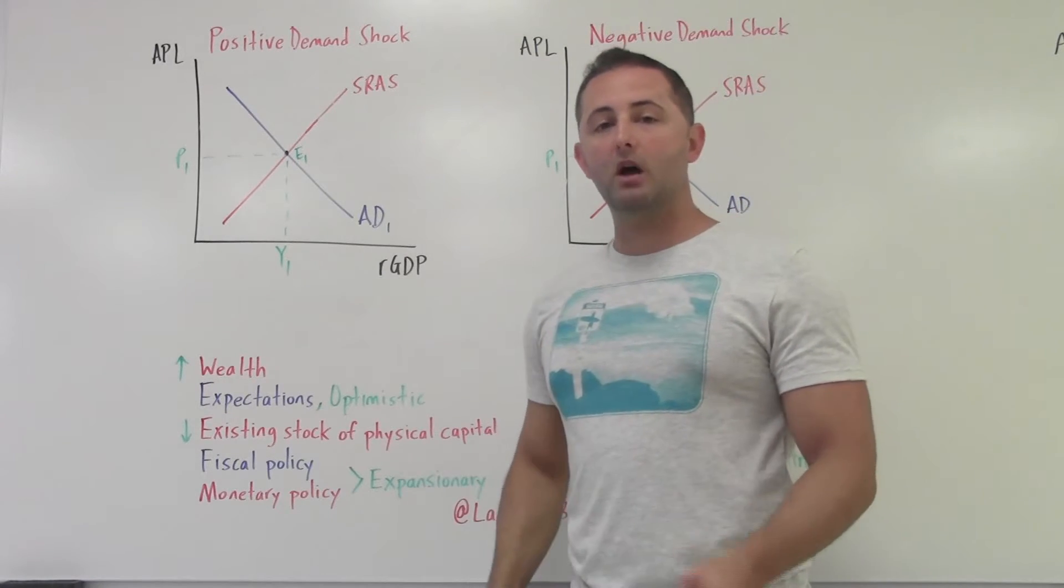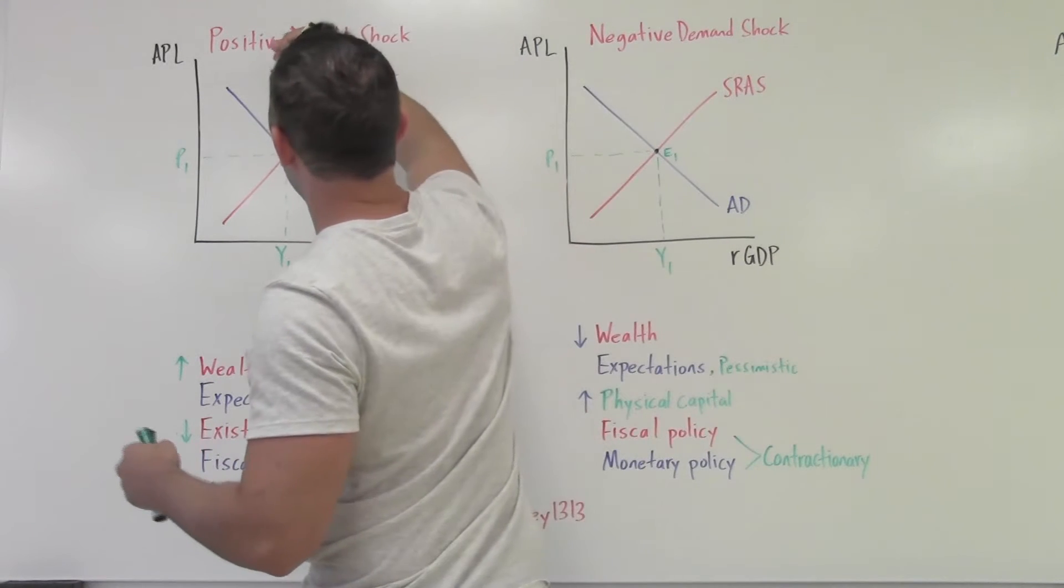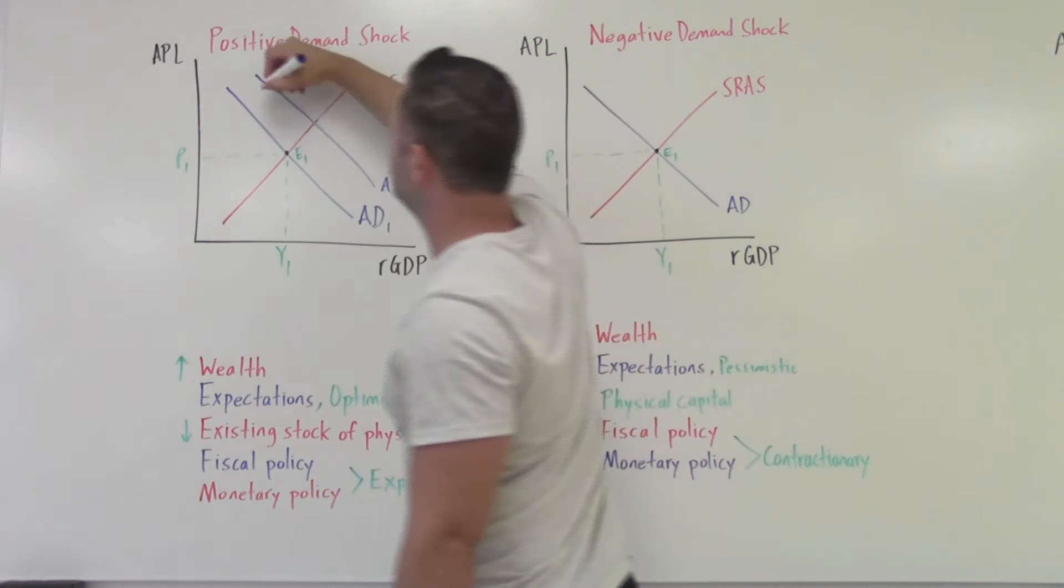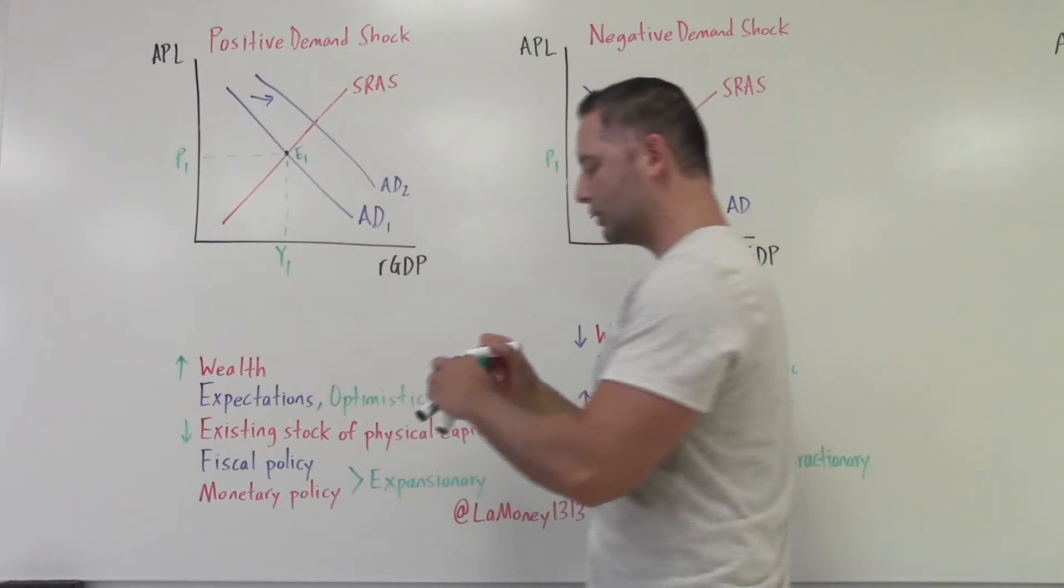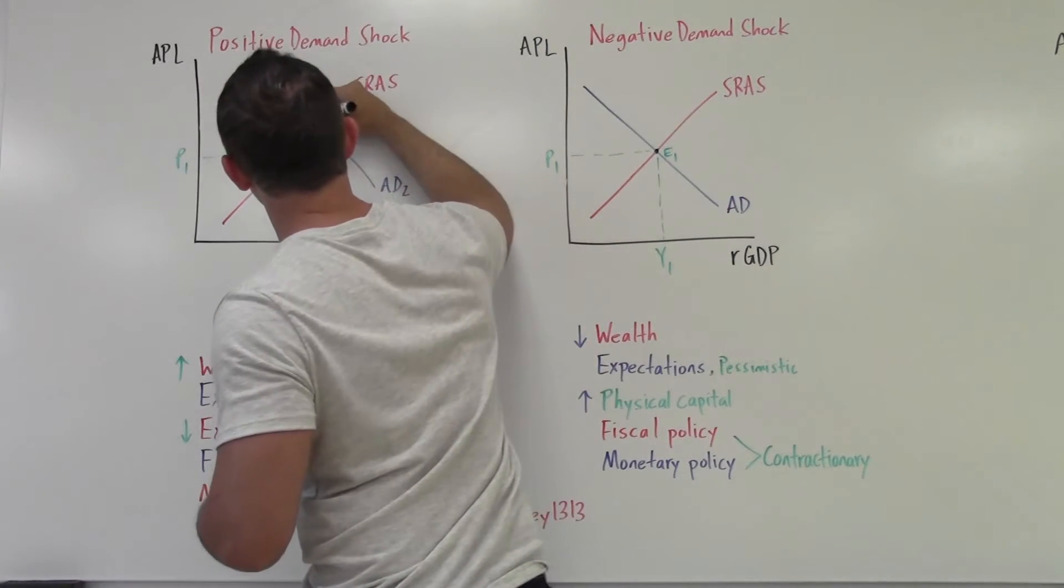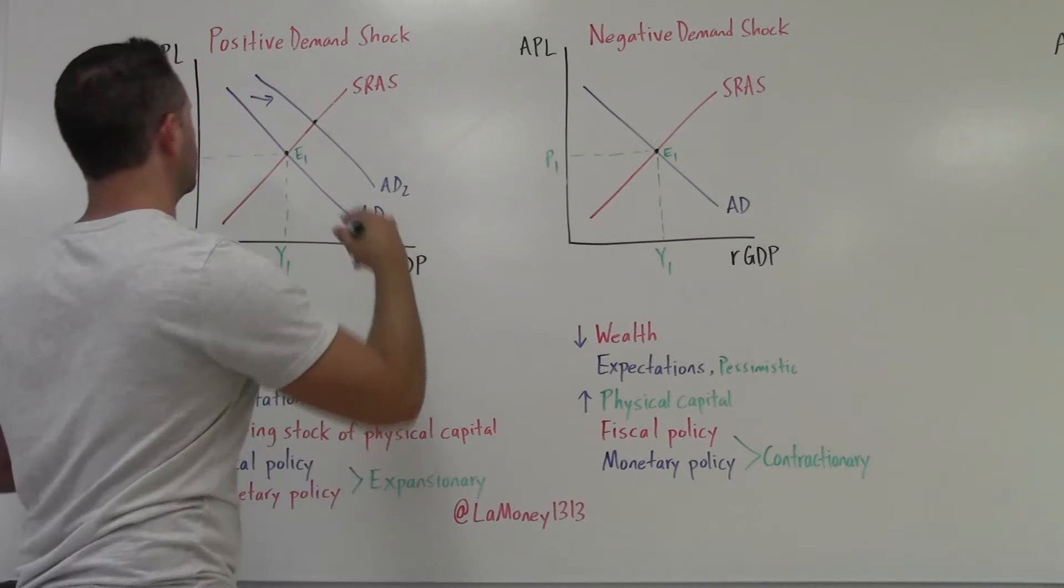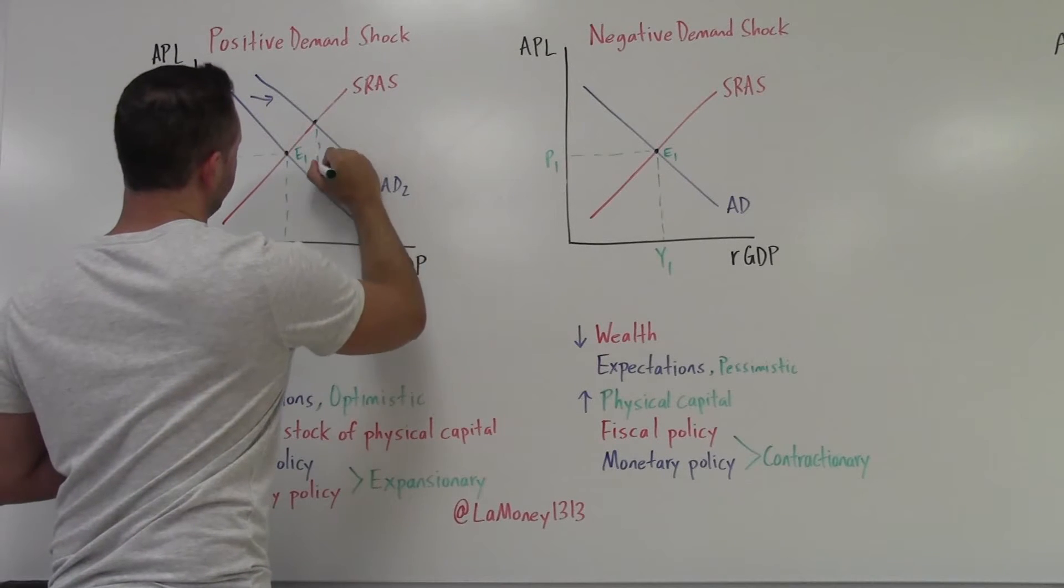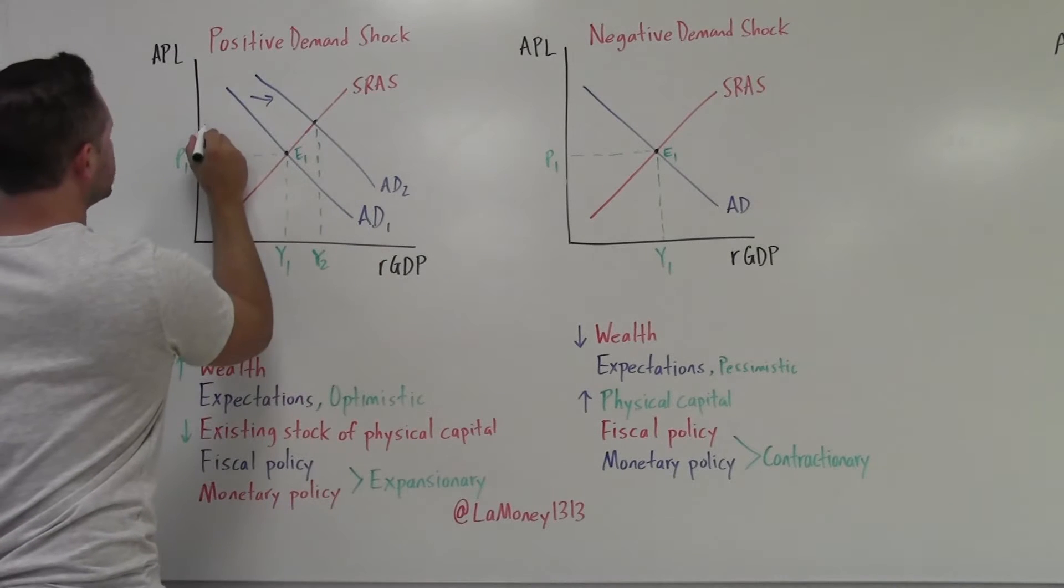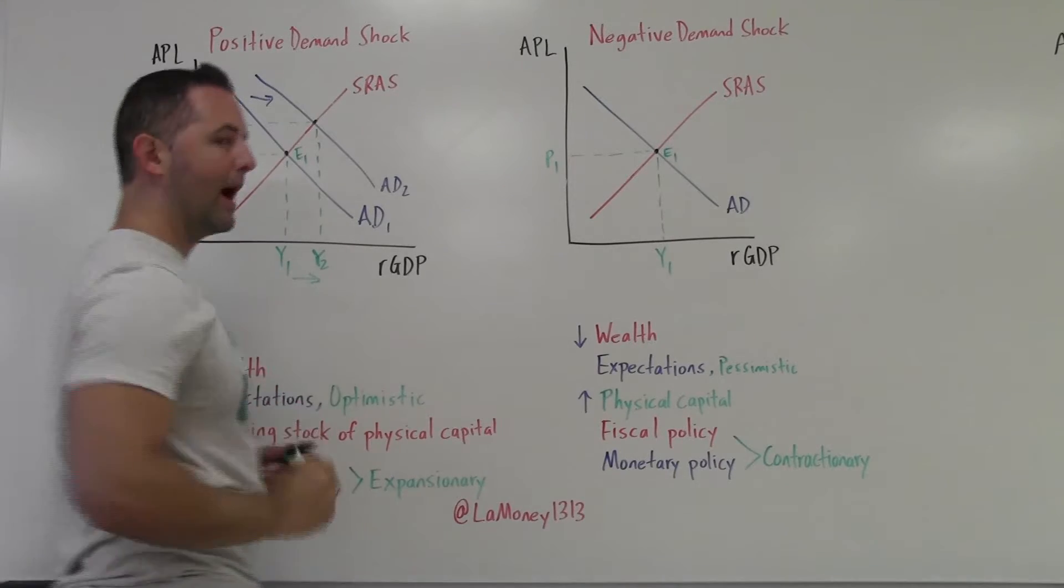So what happens when we have a positive demand shock, if aggregate demand increases? Which way is our curve going to shift? Hopefully you've already said it. If you're drawing along with me, we're drawing an aggregate demand curve shifting to the right. So we have a rightward shift of our aggregate demand curve. Looks something like this. Mine is a little bit crooked, but that's kind of good because remember they don't have to be perfect. Everything doesn't have to be perfectly to scale. The main idea is that you are showing a rightward shift of the aggregate demand curve. And now we have our new place of output and our new price level.